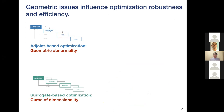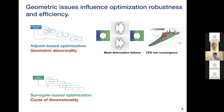However, both methods suffer from issues related to the definition of the geometric design space. For adjoint-based optimization, although it is efficient in high-dimensional design optimization, its performance is sensitive to failures in function evaluations. Geometric abnormality is an issue that results in mesh deformation failures and CFD non-convergence. A few such failures will cause the entire optimization to fail, meaning all the time and cost spent previously will be totally wasted.